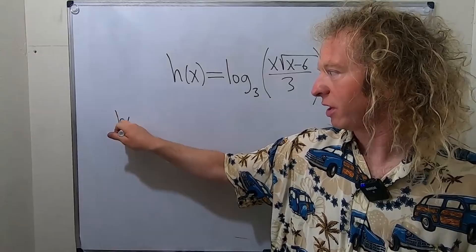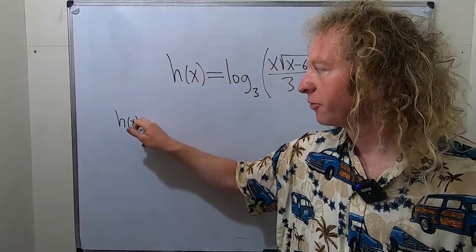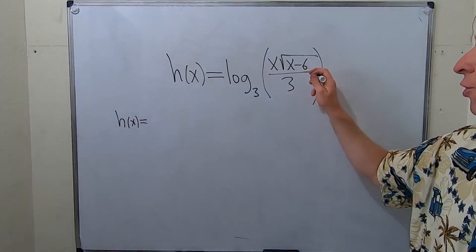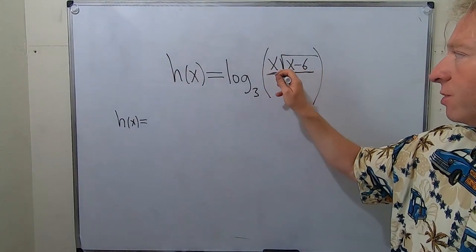So I'll start over here. h of x. First we're going to use the quotient rule property of logs. Whenever you have a fraction it turns into subtraction.